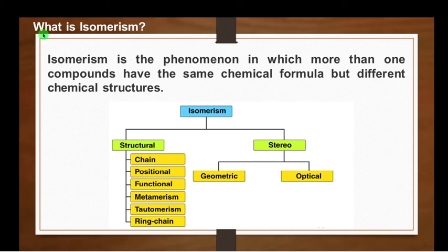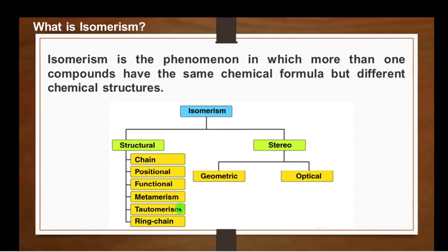Isomerism is a phenomenon in which one or more than one compound has the same chemical formula but different chemical structures. Isomerism is classified into two categories: structural isomerism and stereoisomerism. Structural isomerism is further classified as chain isomerism, positional isomerism, functional isomerism, metamerism, tautomerism, and ring-chain isomerism. Stereoisomerism is classified as geometrical isomerism and optical isomerism.